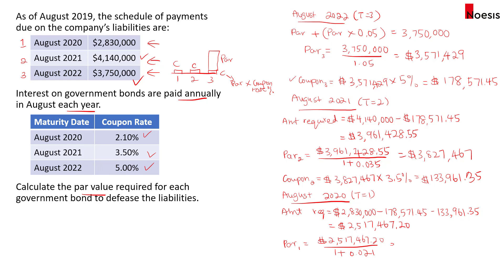That gives us a par value of $2,465,688 required for the one-year bond. To complete everything, the coupon for the one-year bond is the par value multiplied by the coupon rate of 2.1%, which equals $51,779.45.